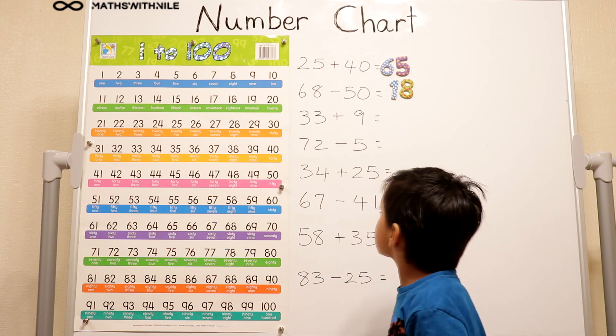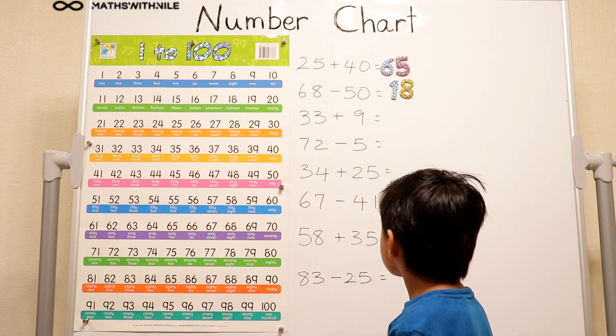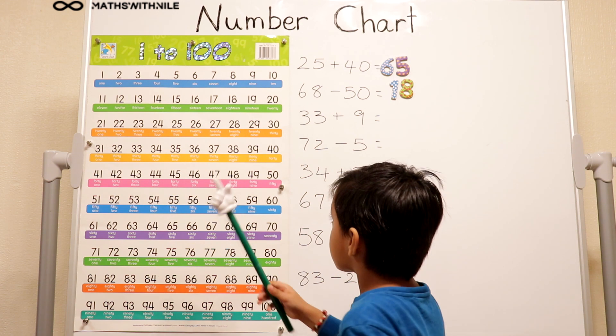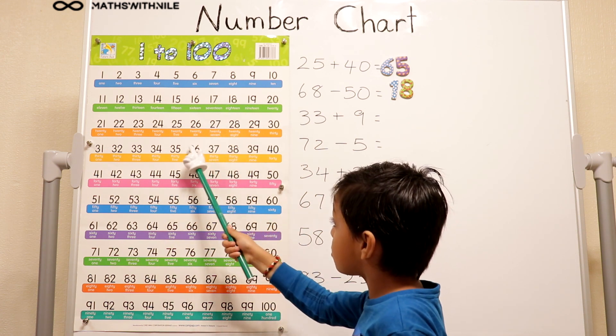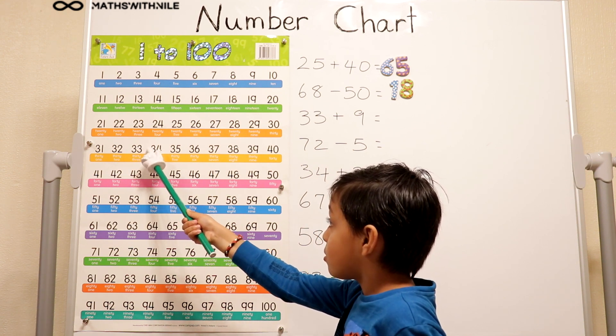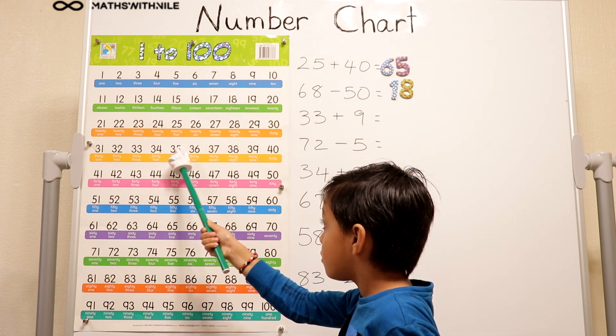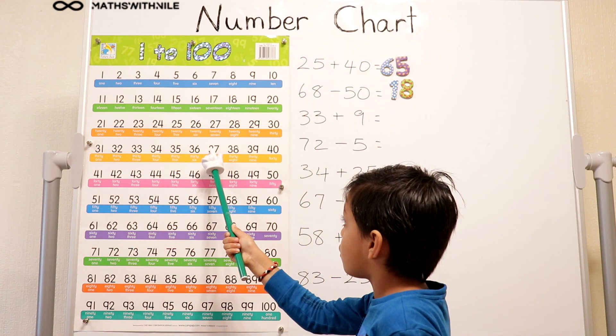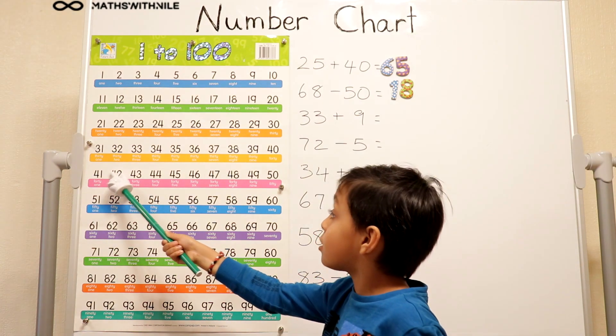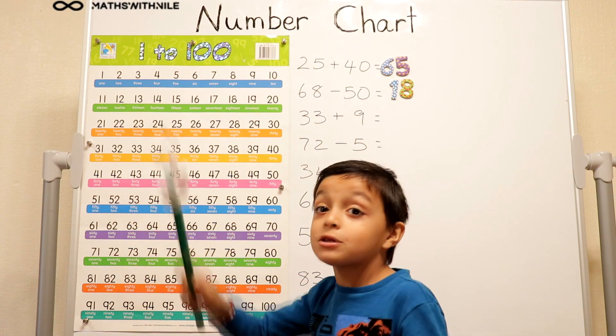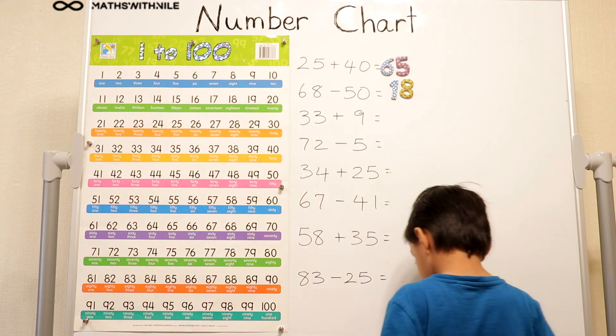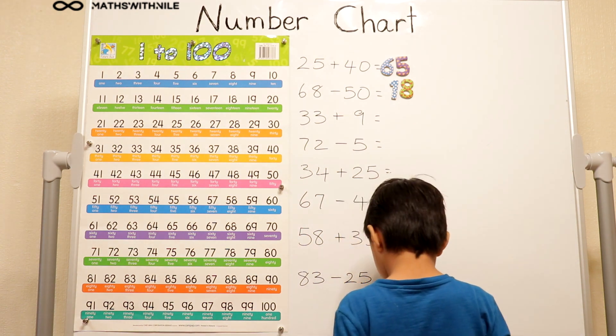And then our next question is 33 plus 9. So we got 33 plus 9. So 33 is right here plus 1, 2, 3, 4, 5, 6, 7, 8, 9. So it equals 42. Okay. Can you put the 42 up and then we'll have a little discussion. Okay. 42.